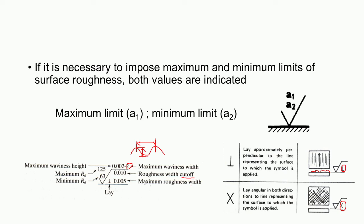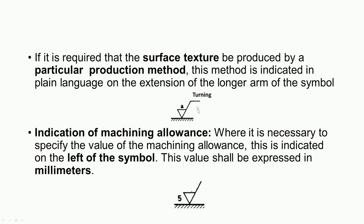If a particular production method is required — such as shaping, turning, or grinding — that is mentioned on the horizontal line of the symbol. For example, the symbol with a bar indicates machining is required, with 'turning operation' written and the roughness value also mentioned. The machining allowance provided on the work piece — for example, 5 mm — is also indicated in the symbol.